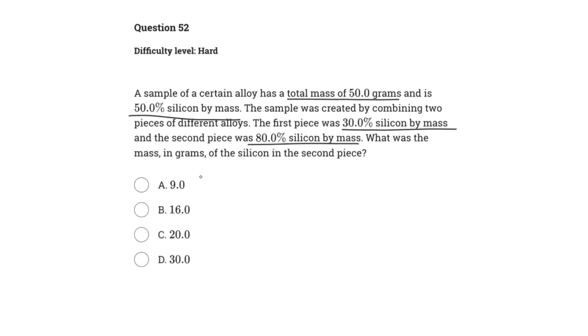To solve this problem, we need to set up a system. What we know now is that the first piece and the second piece make up this certain sample of alloy. What we can determine is that the total mass - this is pretty much the only information we're given in terms of actual mass - is that the total mass of the alloy is 50 grams.